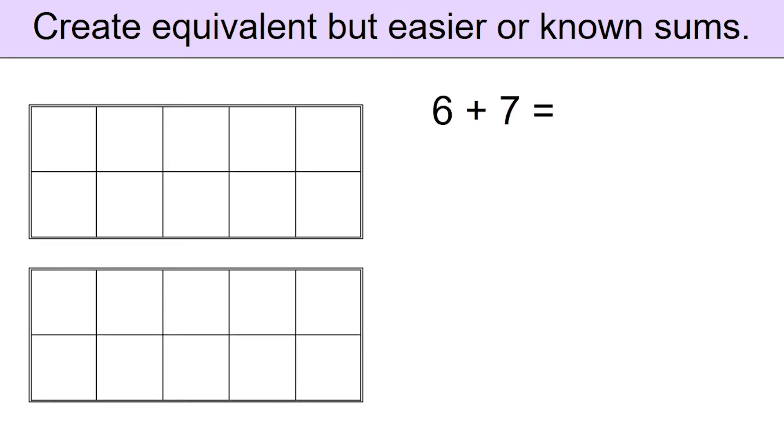Use 2 ten frames. To add 6 plus 7, in the first ten frame, place 6 yellow counters. In the second ten frame, place 7 red counters.